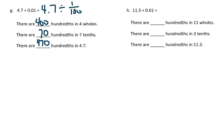Now let's look at H. H reads 11 and 3-tenths divided by one-hundredth. Again, we're going to write this with a fraction divisor, so I'm going to divide that by one-hundredth. We know that there are 1,100 hundredths in 11 wholes, and there are 30 hundredths in 3-tenths. Therefore, there are 1,130 hundredths in 11 and 3-tenths.